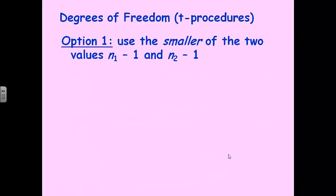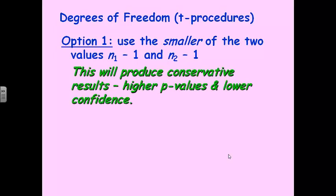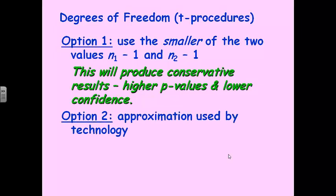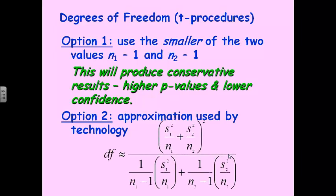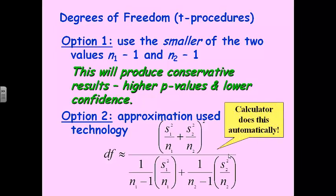Since we'll have to use T procedures most of the time, there are two options for degrees of freedom. Option one: use the smaller of the two values — sample one size minus one, and sample two size minus two. So if you have 30 subjects in the first and 27 in the second, we use the smaller to establish our degrees of freedom, because we want to be more conservative. This produces conservative values. Option two — and this is probably the best way — use an approximation from your calculator. Here's the formula for that, but don't write it down; you do not need to know how to calculate degrees of freedom for a two-sample test. The calculator does it automatically for you.